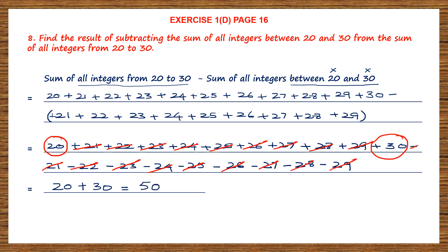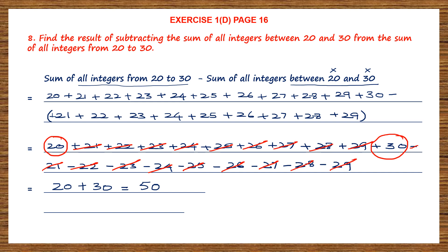So when you subtract the sum of all integers from 20 to 30 and the sum of all integers between 20 and 30, your answer is 50. This is much easier than adding up all the numbers separately. This is how you find the result by cancelling and adding whatever is left. Our final answer is 50.